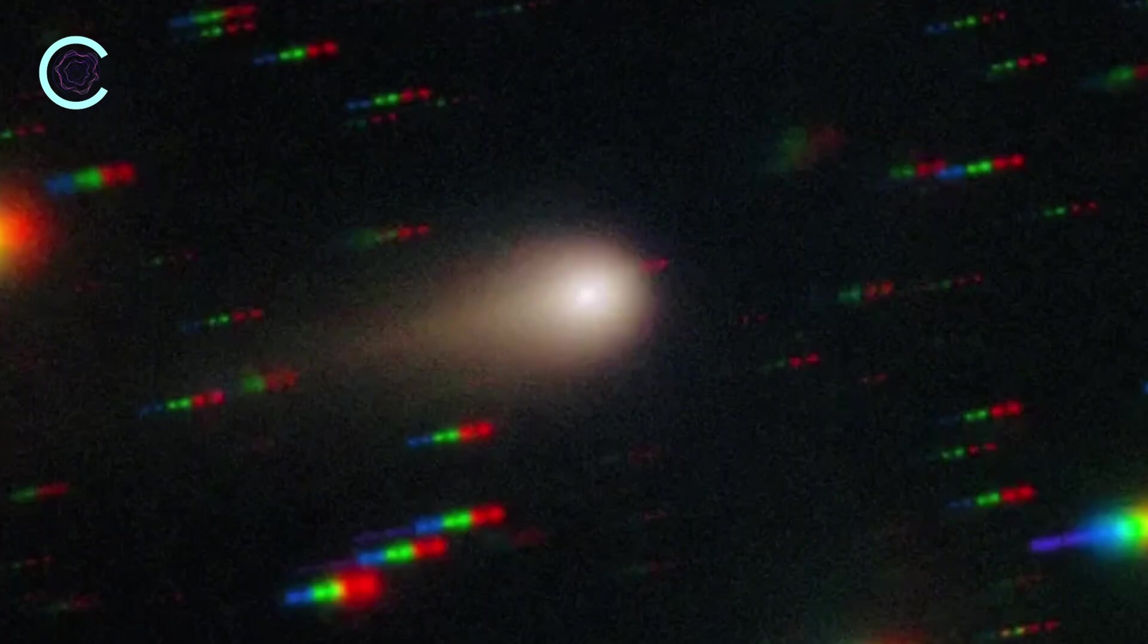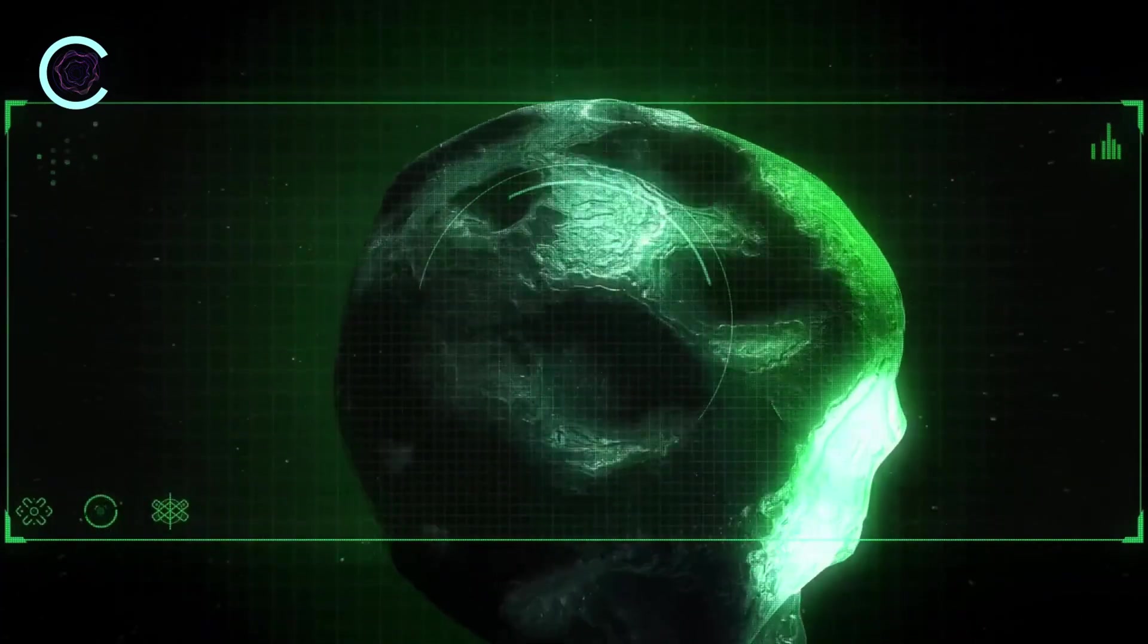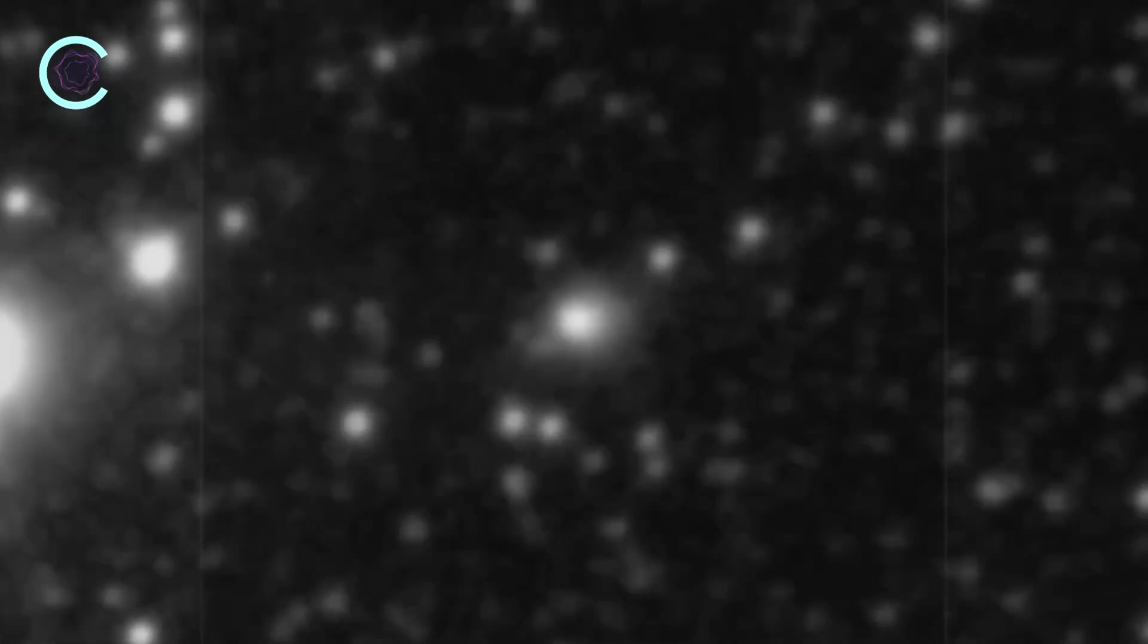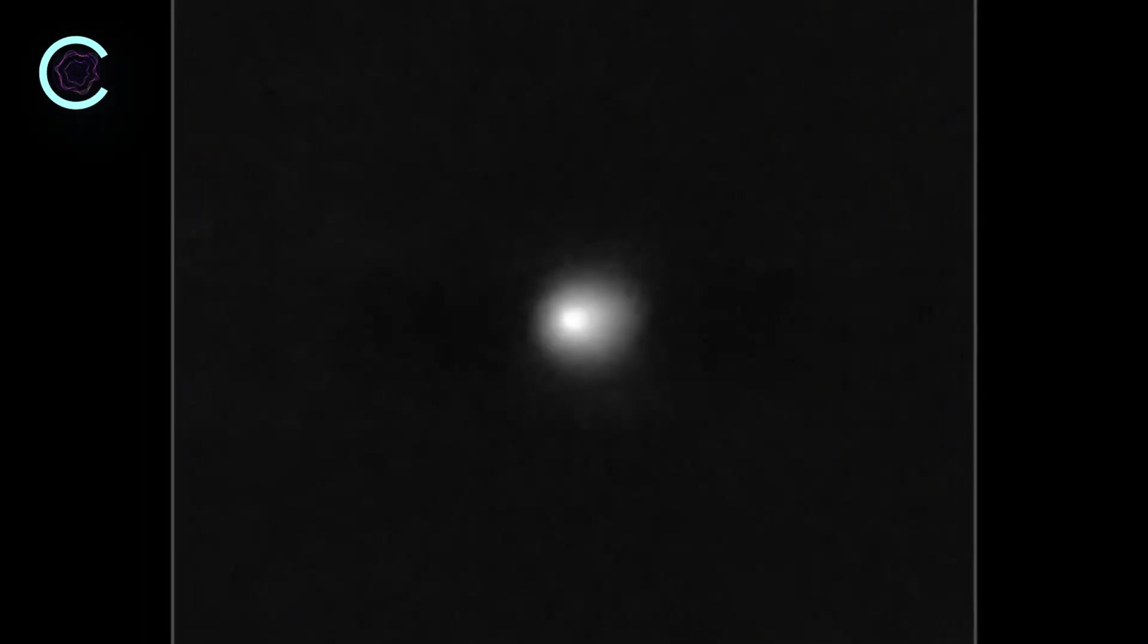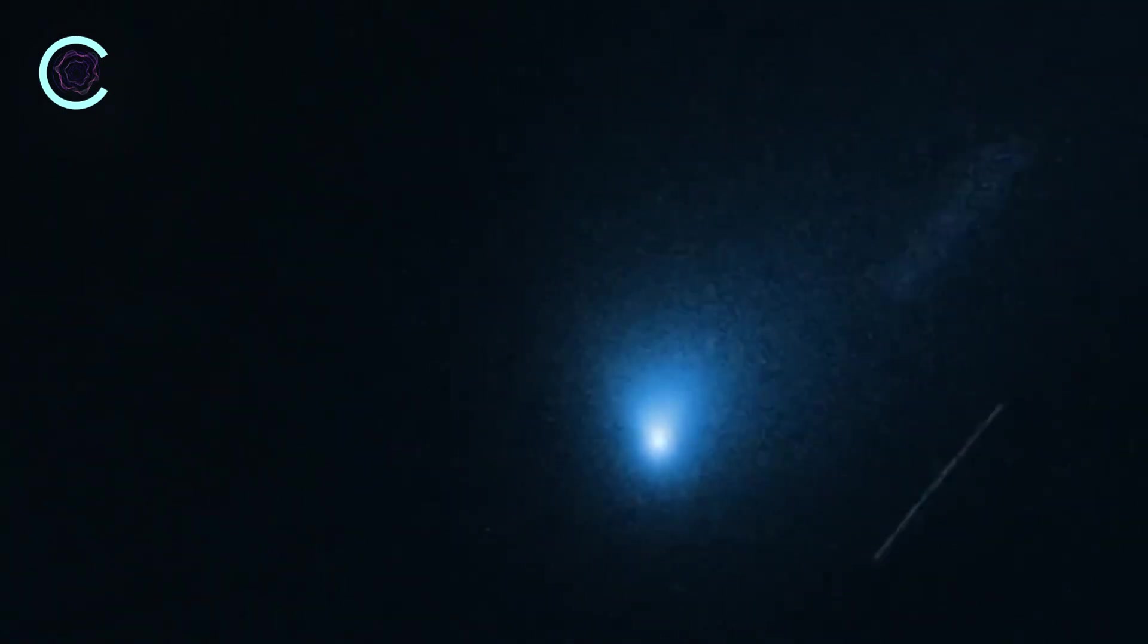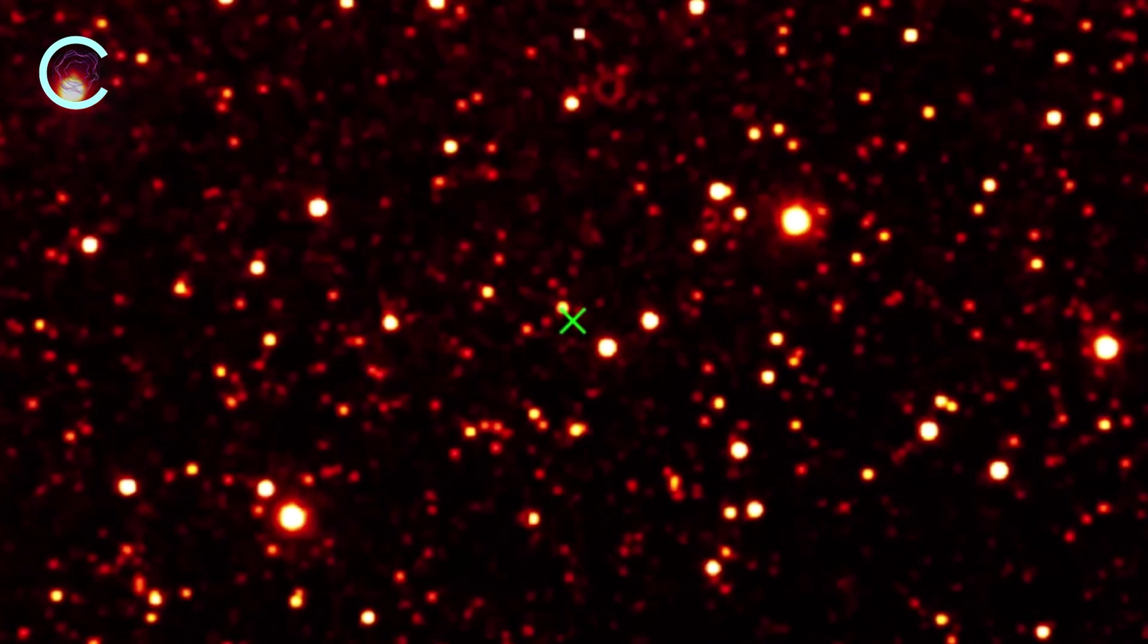That's when scientists started looking at the rest of the material in the coma, the dusty atmosphere surrounding the object. And that's where things got even weirder. Instead of the usual mix of water vapor and some CO2, Atlas is loaded with huge amounts of carbon dioxide, far more than we normally see in comets, and significantly less water than expected. CO2 doesn't produce green light. It simply makes an object look bright, so that still doesn't explain the glow.